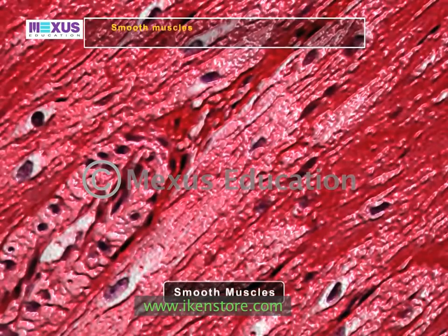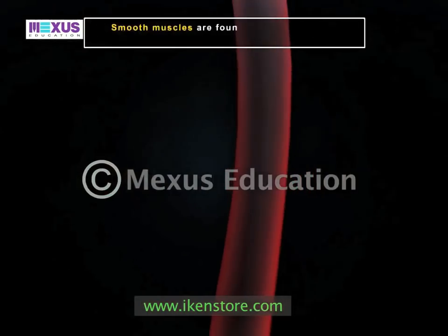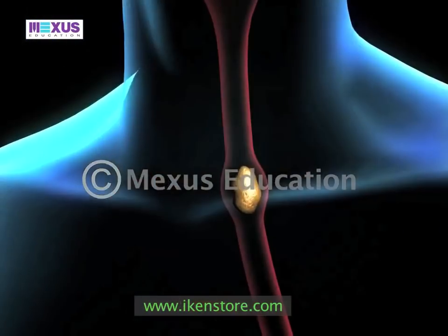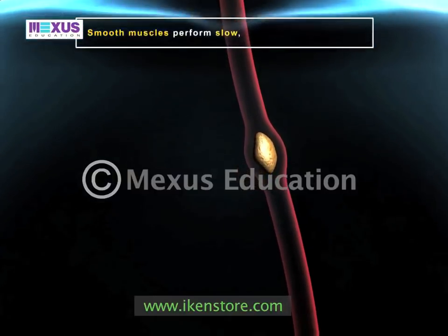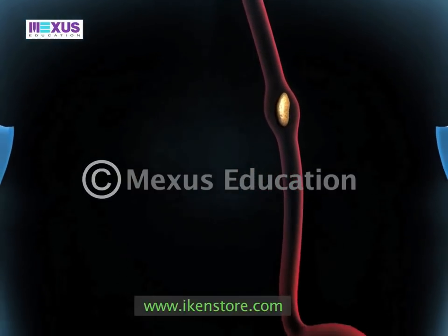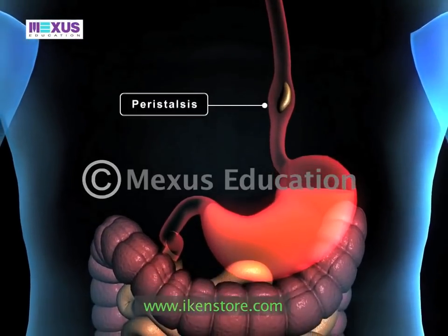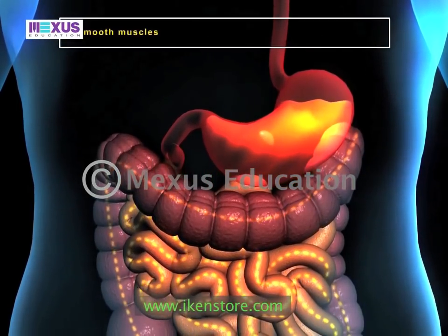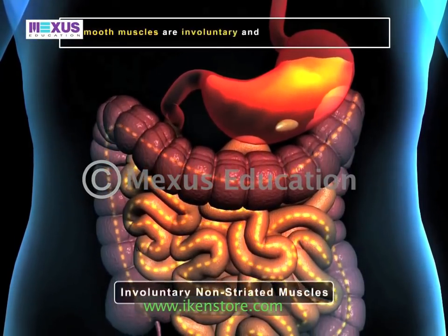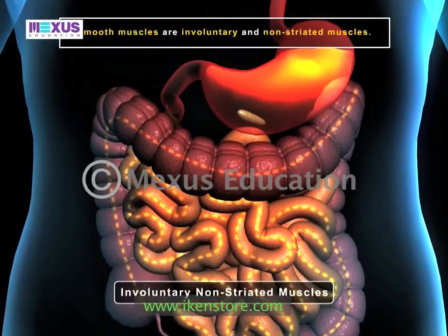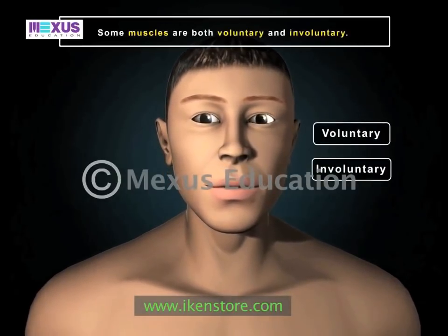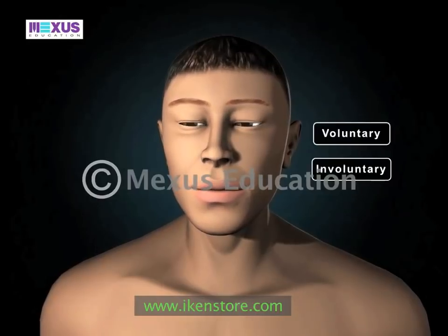The third type of muscle is the smooth muscle or non-striated muscle. It is found in structures such as the esophagus and organs such as the stomach and intestines. Smooth muscles perform slow, long-term contractions; for example, peristalsis is a result of smooth muscle contraction. Unlike skeletal muscles, smooth muscles are not under our control — they are involuntary and non-striated. However, some muscles are both voluntary and involuntary; the eyelids are an example of this type of muscle.